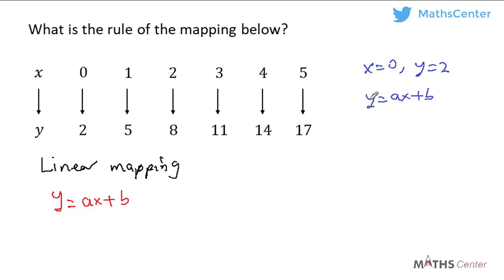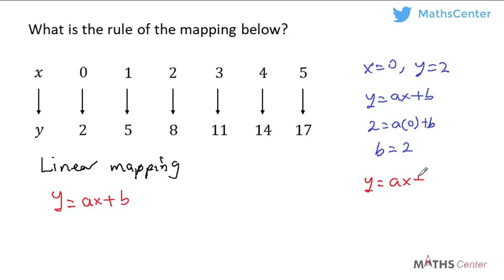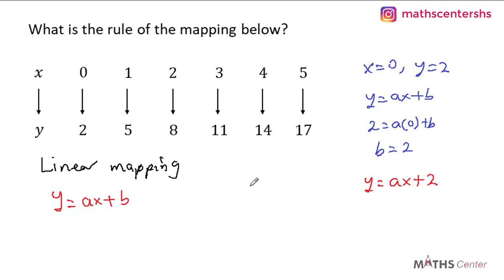A times 0 gives us 0, so b is equal to 2. Our rule is now y is equal to ax plus 2. We need to find the value of a. To do that, I'll pick another pair: x equal to 1 and y equal to 5. When x is equal to 1 and y is equal to 5, remember our rule is y is equal to ax plus 2.